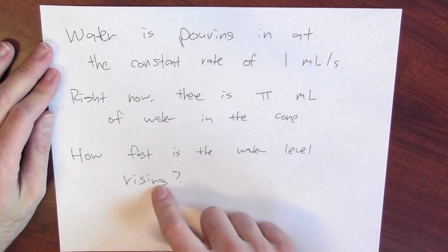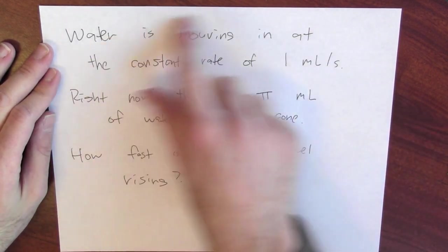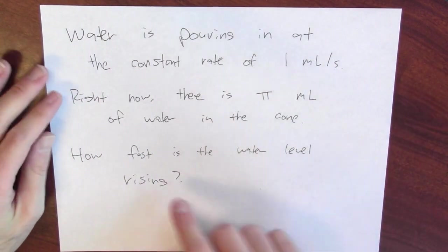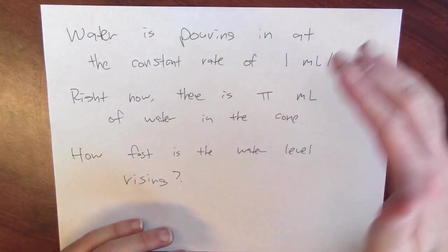That's the related rates question. I know how fast the water is coming in. I know the change in volume. I want to know how quickly the water height is changing. We can set this up as a related rates problem using the same four step process. Draw a picture. Write down an equation. Differentiate that equation and evaluate the resulting derivative.